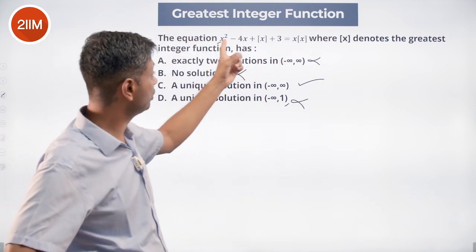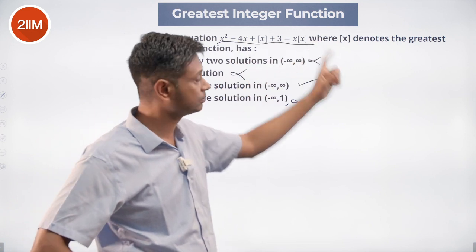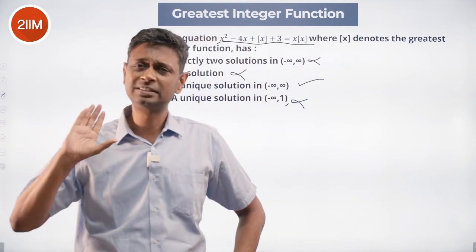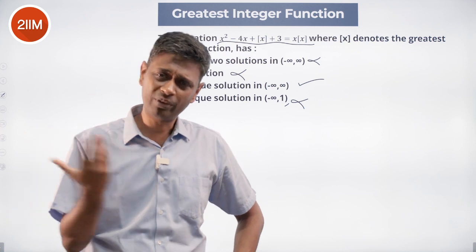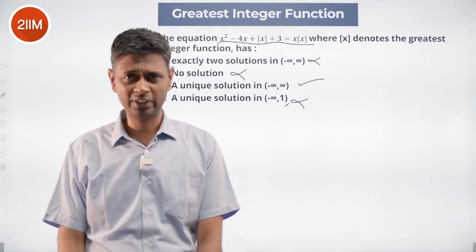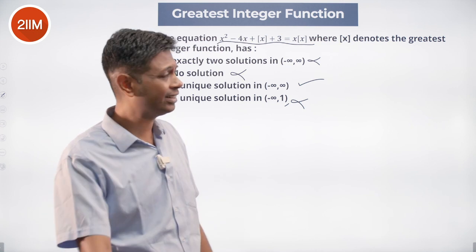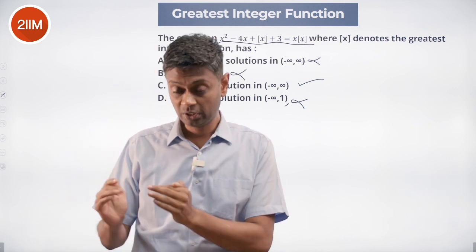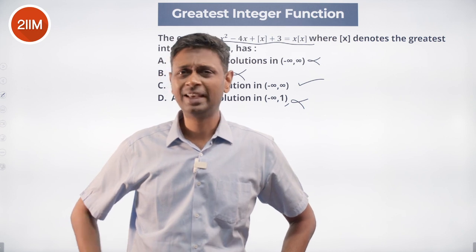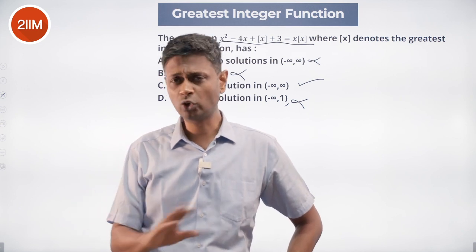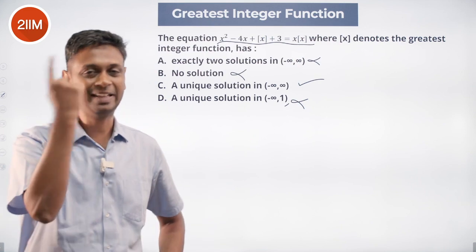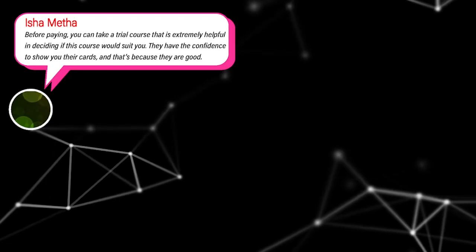This is actually beautifully factorizing. The rule of thumb: whenever you're looking to break something down, bring everything to one side, set it to 0, and see if there's some way of manipulating or factorizing it to simplify. It factorizes rather beautifully as x minus 1 times x minus greatest integer of x minus 3. The second factor cannot go to 0; x minus 1 goes to 0 at x equals 1.